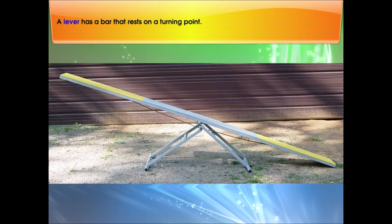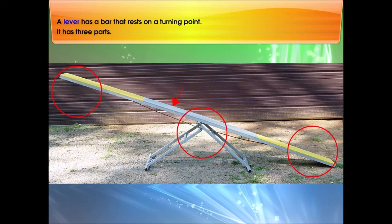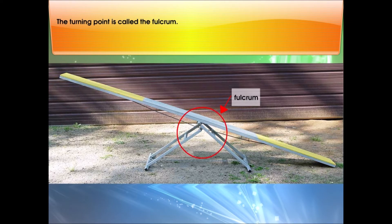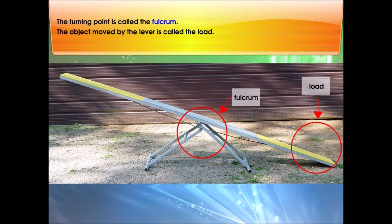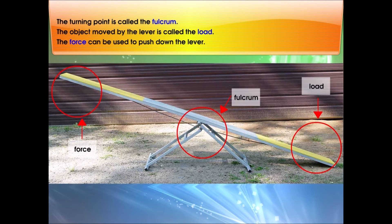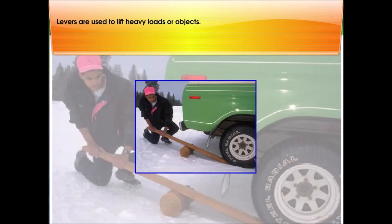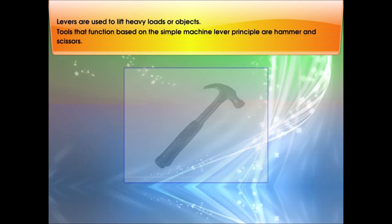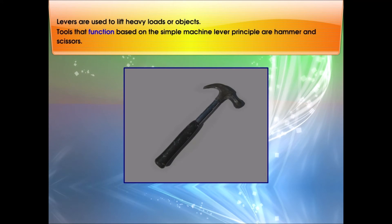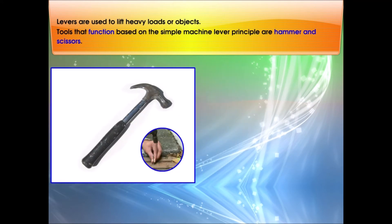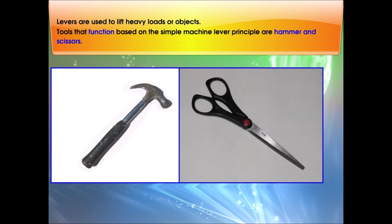A lever has a bar that rests on a turning point. It has three parts. The turning point is called the fulcrum. The object moved by the lever is called the load. The force can be used to push down the lever. Levers are used to lift heavy loads or objects. Tools that function based on the simple machine lever principle are hammer and scissors.